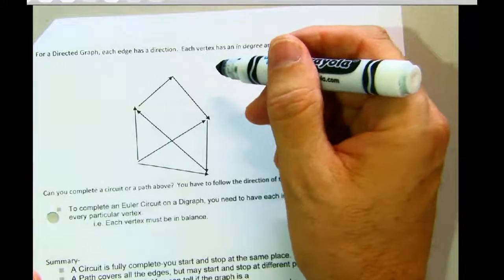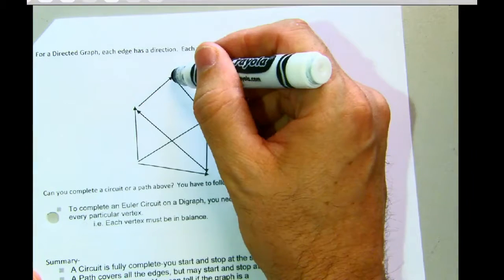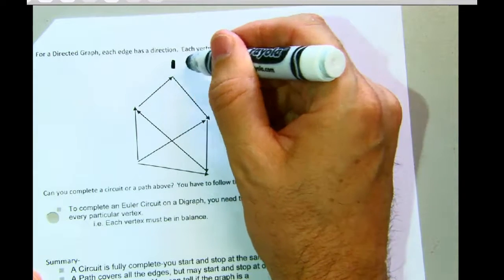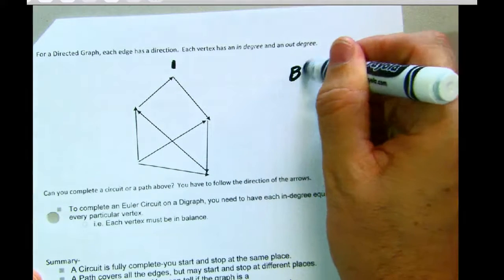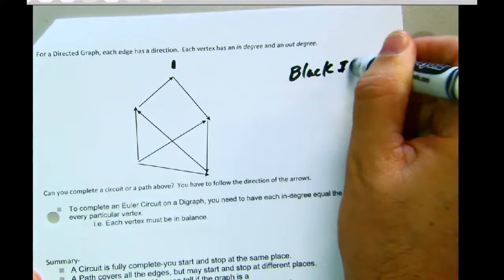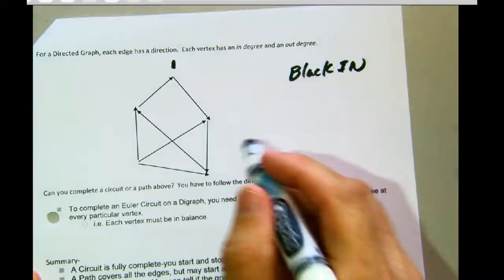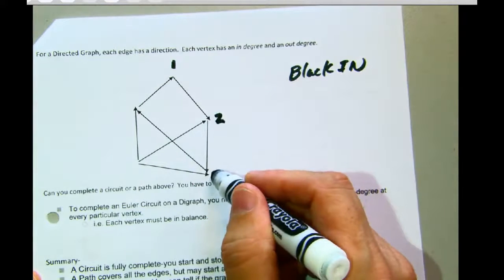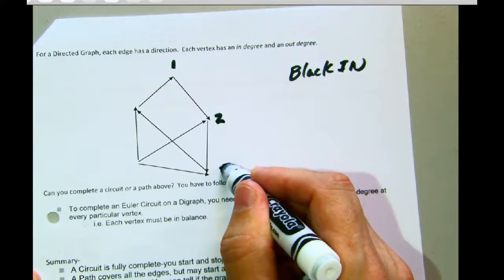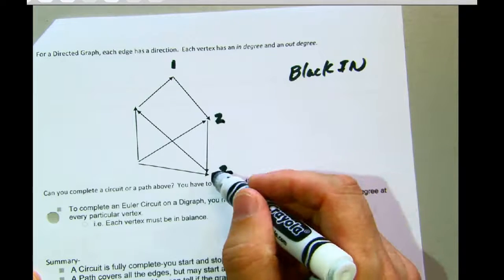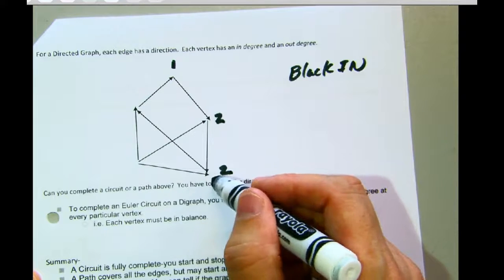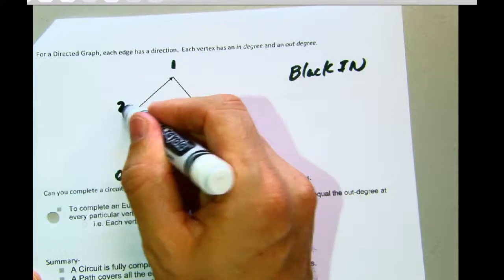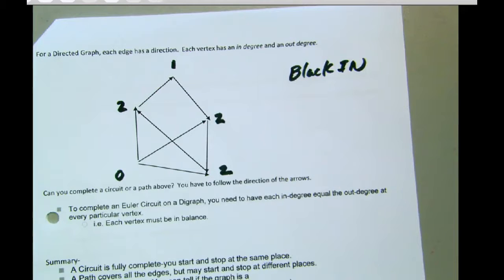I'm going to label in black all the in-degrees. So if I look at this, this has an arrow coming into it. So that's going to be an in-degree. So black will be in. Okay? So this one, how many does it have coming into it? Well, that would be two. How many coming into this? I see two. It's hard to tell there, but there are two. One coming down, one over. This one has zero in-degrees. This one has two. So that's all of the in-degrees.